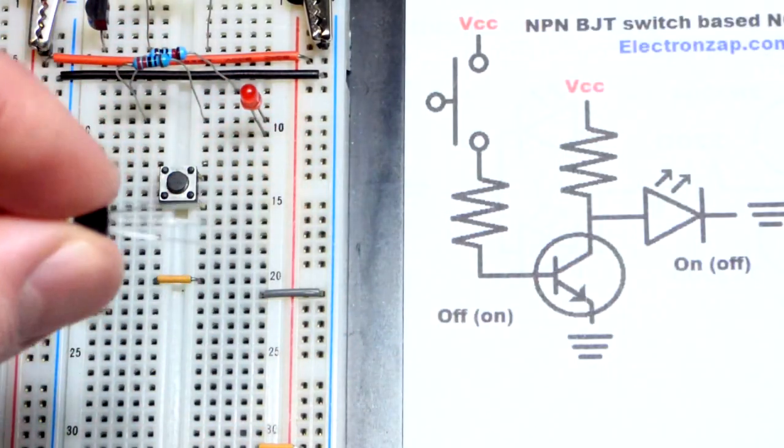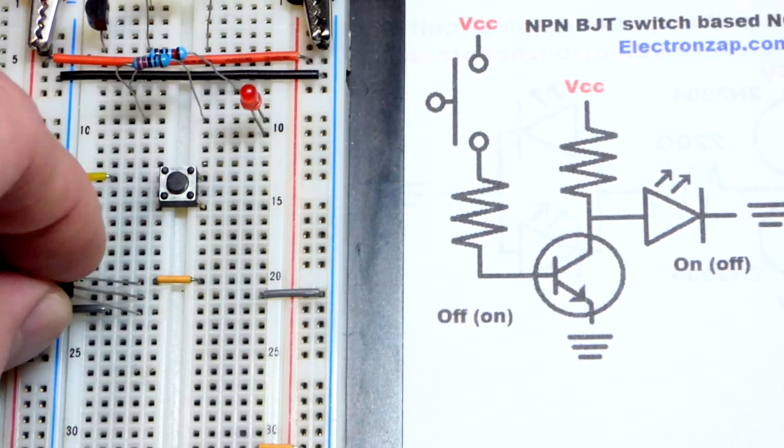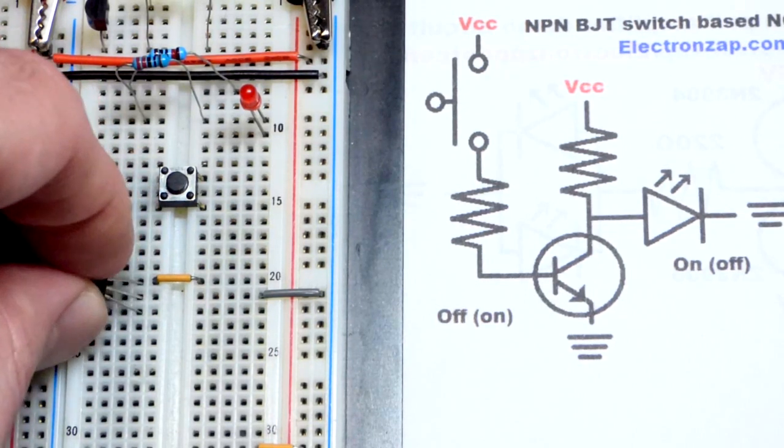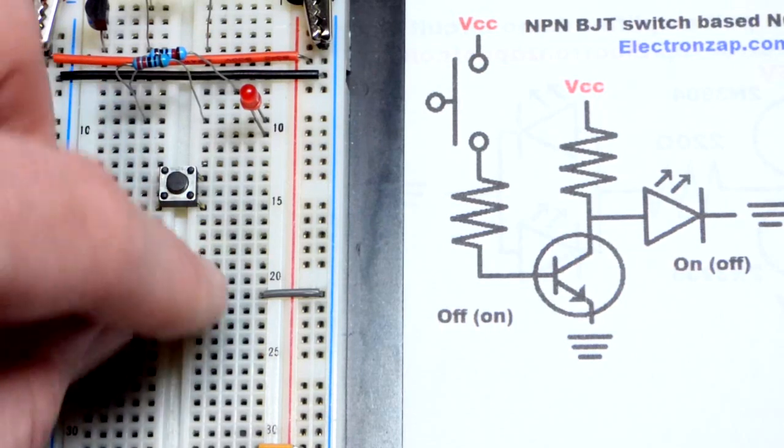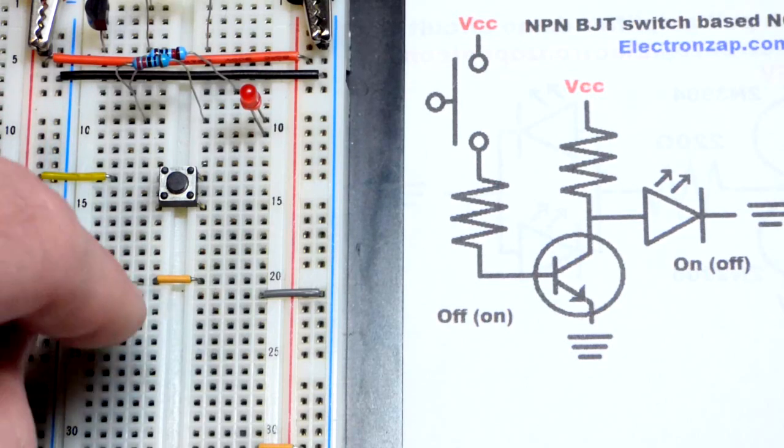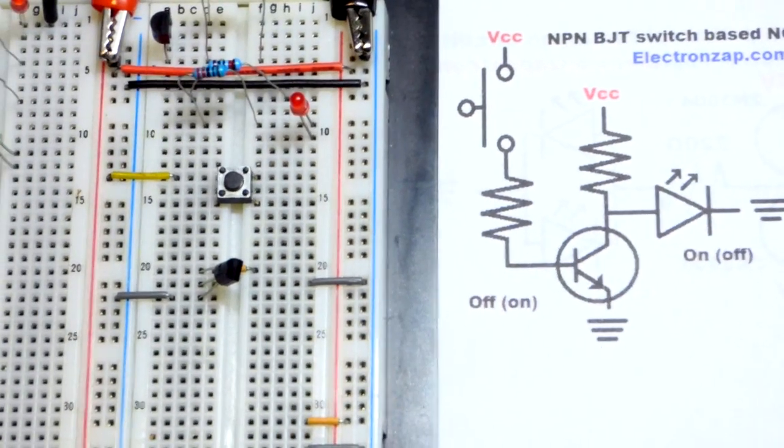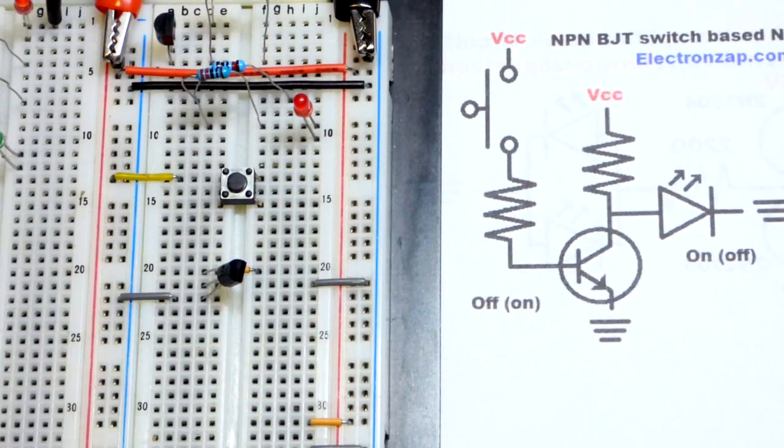Now the collector, we're going to put to this orange jumper, which will head to the LED. You can see we got a couple rows right next to each other with jumpers on different rows. So the base is on its own row there, and the emitter down at the bottom is connected directly to ground.